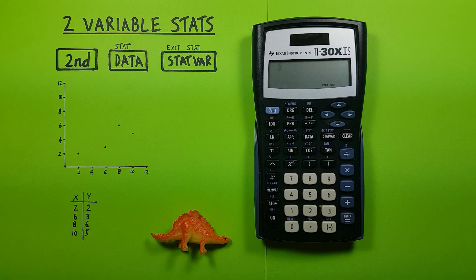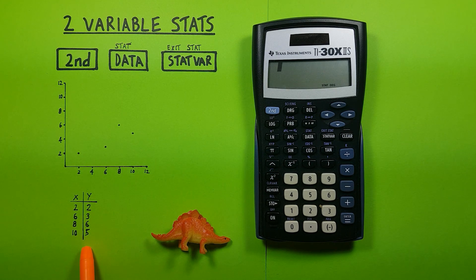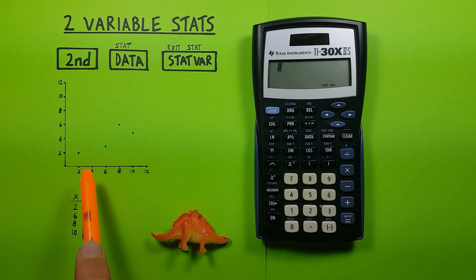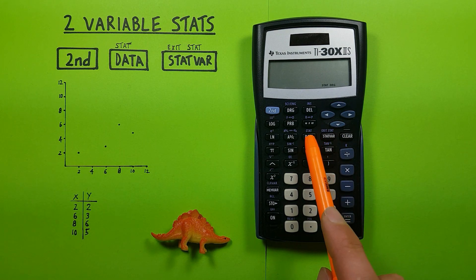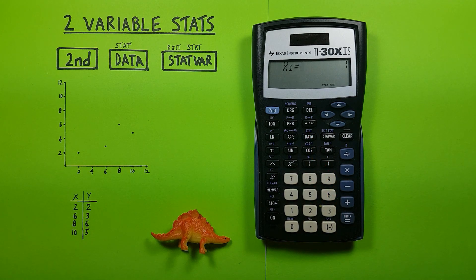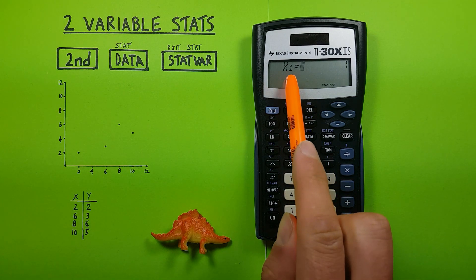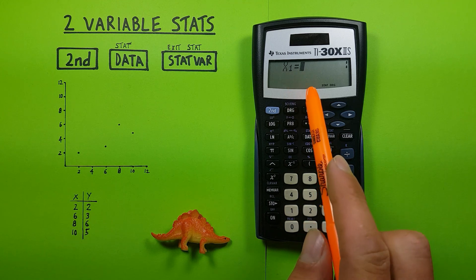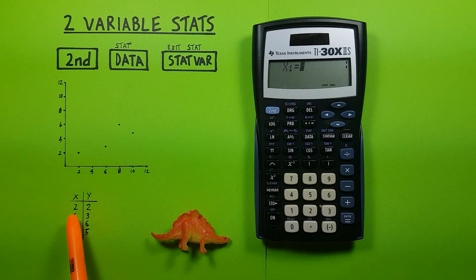Now if we have this data set with x and y coordinates that can be graphed like this and we want to enter our data, we start by pressing the data key. First thing that appears is x1, asking for the x coordinate of our first point. Our first point is x equals 2, y equals 2.